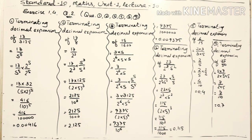For question 9, the terminating decimal expansion of 35 upon 50: I factorize and cancel the common factor 5, leaving 7 upon 2 into 5, which is 7 upon 10. Here 2 and 5 already have equal power of 1, so I don't need to multiply anything. The value of 7 upon 10 is 0.7.